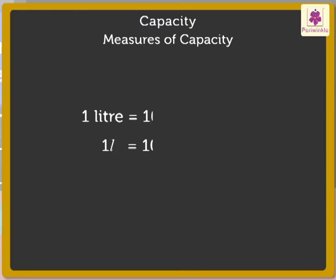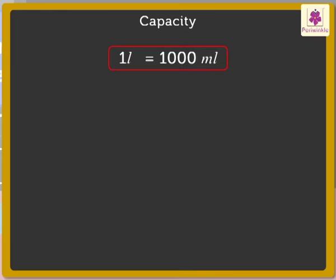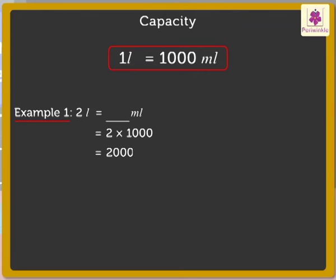To change liter to milliliter, we multiply liter by one thousand. Let's see how. Let's convert two liters into milliliters. So here, two into one thousand is equal to two thousand milliliters. Thus, we get two liters is equal to two thousand milliliters.